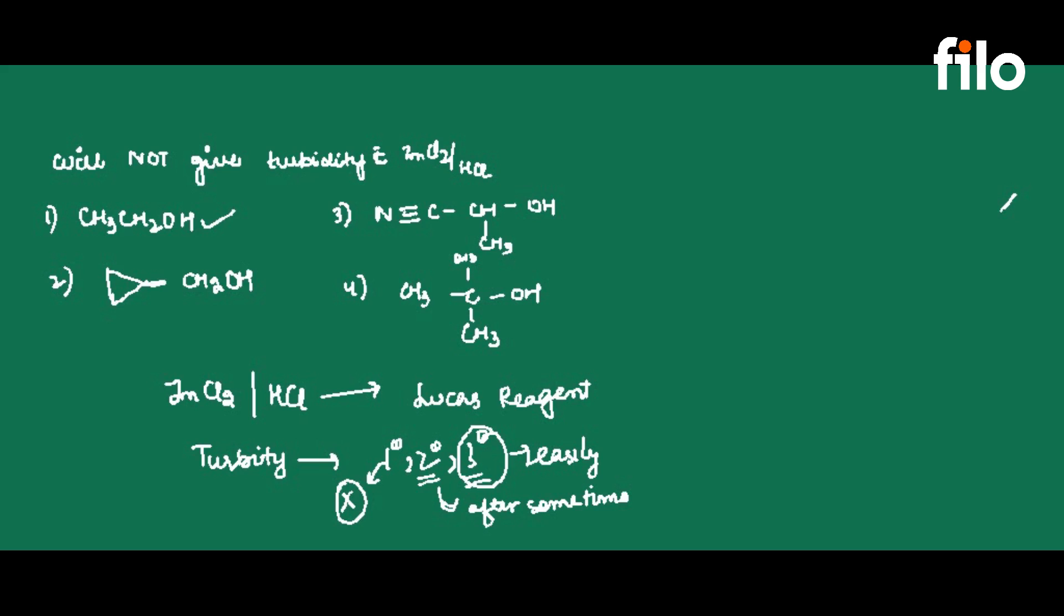This cyclic ring alcohol is one degree, so this means no turbidity. We don't want turbidity.